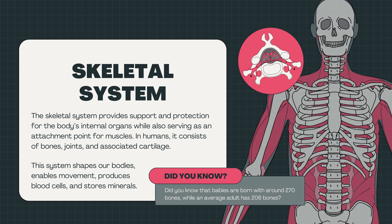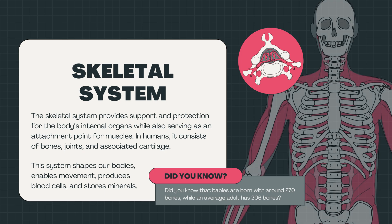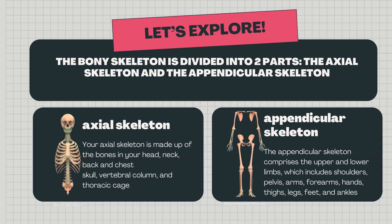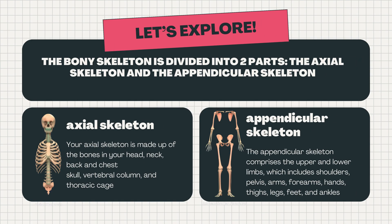In humans, it consists of bones, joints, and associated cartilage. This system shapes our bodies, enables movement, produces blood cells, and stores minerals. The bony skeleton is divided into two parts: the axial skeleton and the appendicular skeleton.